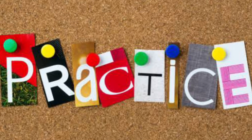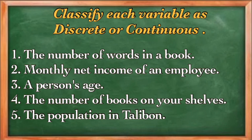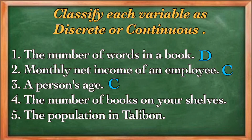Now let us try these examples. Classify each variable as discrete or continuous. Number one: number of words in a book — it is discrete. Monthly net income of an employee — it's not always an exact amount, so it is continuous. Person's age — this is continuous. If someone asks your age, you might say 25, but that's not exactly 25 years; it could be 25 years, 5 months, and 6 days. Number of books on your shelves — it is discrete. Population in Tarlac — it is discrete.